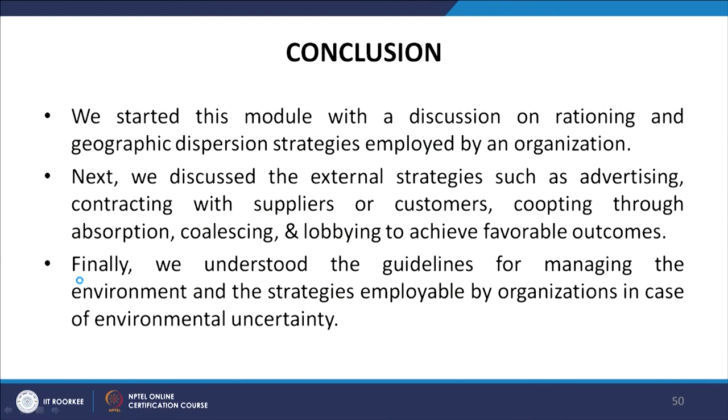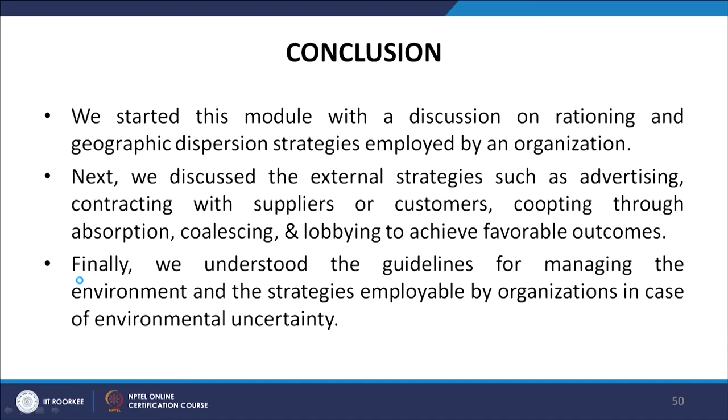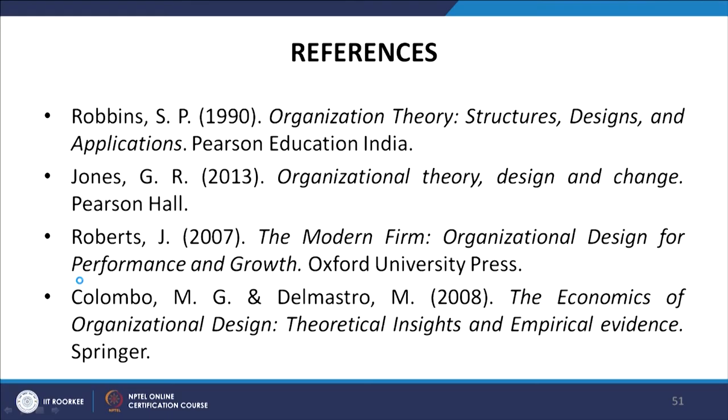To conclude this module: we started with a discussion on rationing and geographic dispersion strategies employed by organizations. Next, we discussed the external strategies such as advertising, contracting with suppliers or customers, co-opting through absorption, coalescing and lobbying to achieve favorable outcomes. Finally, we understood the guidelines for managing the environment and the strategies employable by organizations in cases of environmental uncertainties.